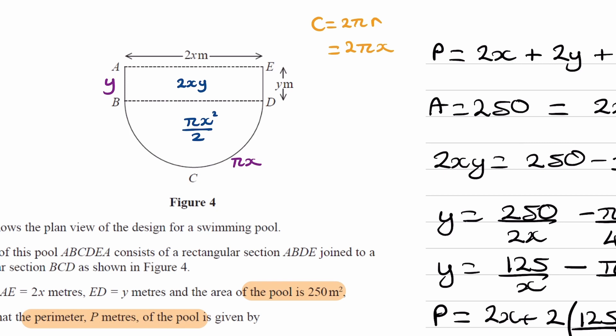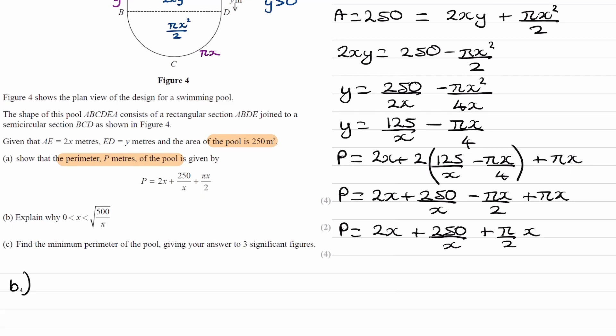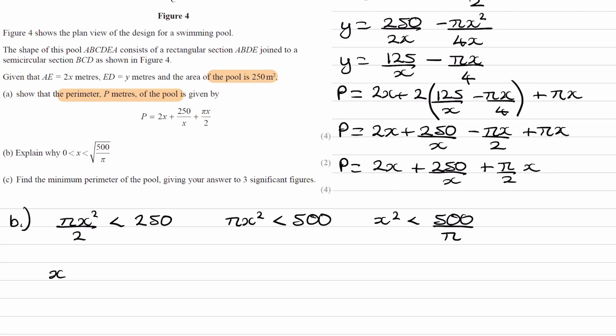That would be the inequality for y. y has to be bigger than 0. When y is just bigger than 0, the area of the semicircle will be just smaller than 250. Because this area here would be just above 0, and therefore this area here would be just below 250. So that's one inequality we can use. The area, πx²/2, of the semicircle must be less than 250. We can rearrange that. πx² is less than 500. x² is less than 500/π. And then we get the top part of the inequality: x is less than √(500/π).